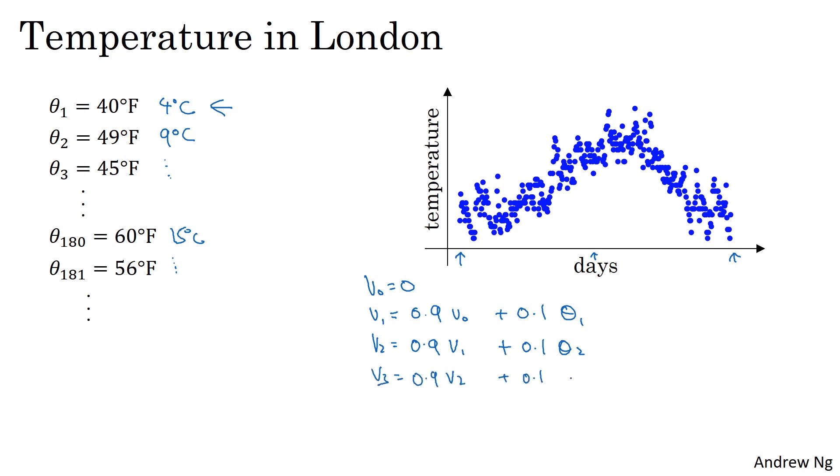V two plus 0.1 times theta three, and so on. And the more general formula is V on a given day is 0.9 times V from the previous day, plus 0.1 times the temperature of that day. So if you compute this and plot it in red, this is what you get. You get a moving average or what's called an exponentially weighted average of the daily temperature.